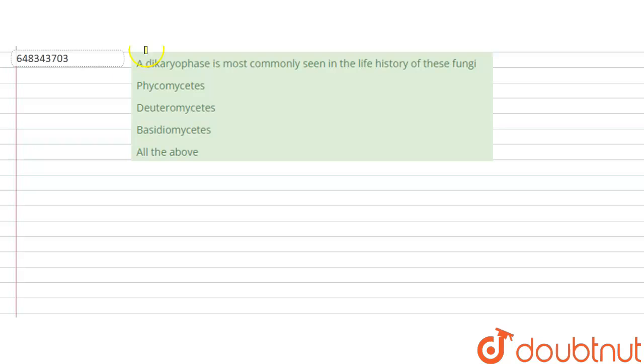The question states: a di carrier phase is most commonly seen in the life history of these fungi. Our options are Phycomycetis, Deuteromycetis, Basidiomycetis, and all the above.